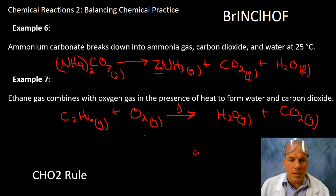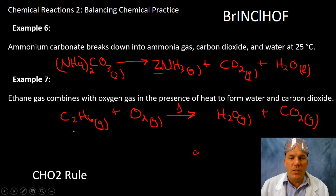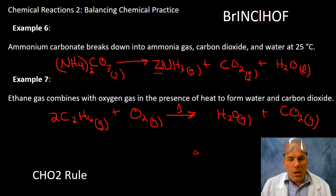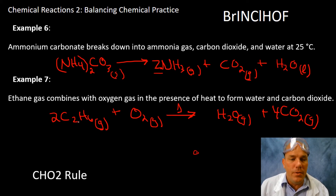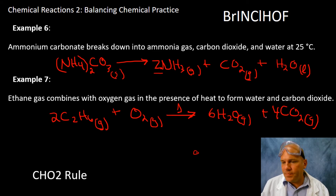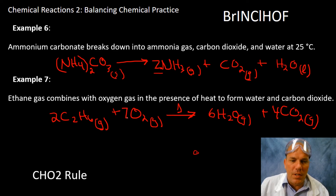Using the CHO-2 rule, we double everything. That gives four carbons — put a four in front of CO₂. Hydrogens: two times six is twelve — put a six in front of water to give twelve. Now oxygen: four CO₂ gives eight oxygens, and six H₂O gives six oxygens — fourteen total. Put a coefficient of seven in front of O₂, giving fourteen oxygens. That balances this combustion reaction.